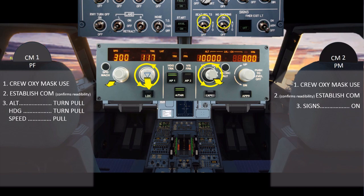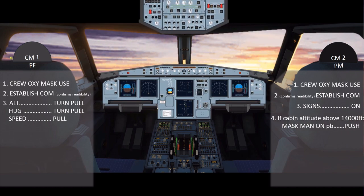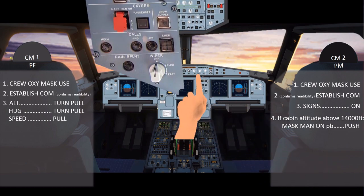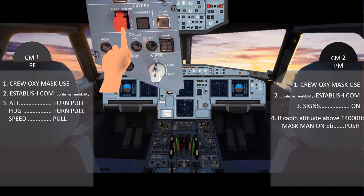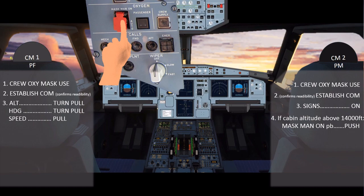Meanwhile, the pilot monitoring puts on the seatbelts and no smoking or no PED signs located at the overhead signs panel. If the cabin altitude goes above 14,000 feet, the pilot monitoring must press the mask man on push button on the overhead panel. When it is obvious that the cabin altitude will exceed 14,000 feet, the pilot monitoring could press the mask man on push button before the cabin altitude reaches 14,000 feet.